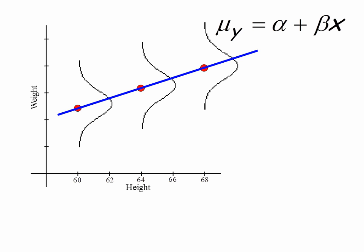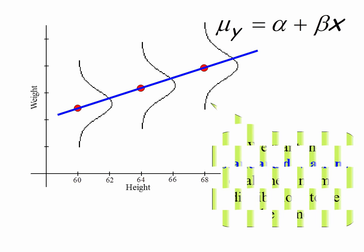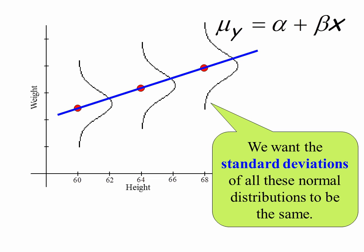The way that we write that is: mu sub y equals alpha, which is your y-intercept or true intercept, plus beta times x, where beta is your slope. What about the standard deviations of all of these normal distributions? Hopefully we understand that the standard deviations of all of these normal distributions should be the same — the same standard deviation across every normal model along the line.